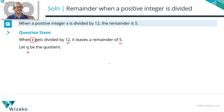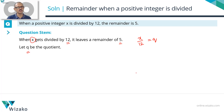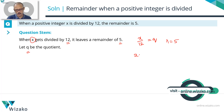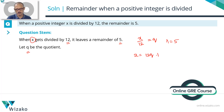Let's write this division in a structured way. x is divided by 12, with quotient q and remainder 5. So x can therefore be expressed as 12q plus 5 — that is, divisor times quotient plus remainder.